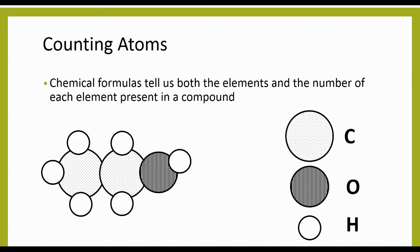If we look at this picture, the two big circles with polka dots stand for the carbon. The middle circle with the stripes is our oxygen, and the little white circles are the hydrogen. So we can find out that we have two carbon atoms, one oxygen, and six hydrogen atoms.